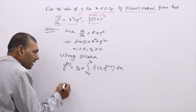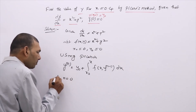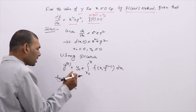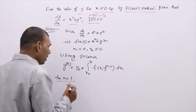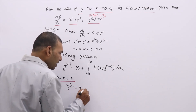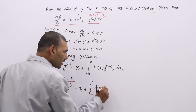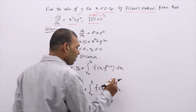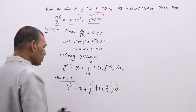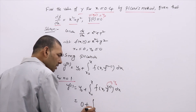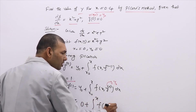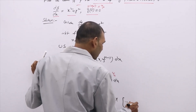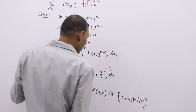Now, writing n equal to 1 in the formula, the first approximation is: y₁ equals y₀ plus the integral from x₀ to x of f(x, y₀) dx. Substituting: 0 plus the integral from 0 to x of f(x, 0) dx. Since f(x, y) equals x squared plus y squared, f(x, 0) gives x squared plus 0 squared.